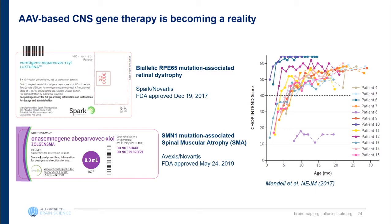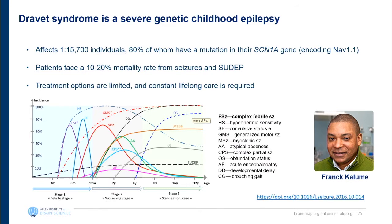We think there's a gigantic opportunity for AAV-based gene therapies to improve human health, and that our AAV-based enhancer vector system will provide the next generation of cell-type-specific and circuit-specific gene therapy efforts. We've been focusing on Dravet syndrome — a severe genetic childhood epilepsy. Most patients have one mutation in one allele of the large gene SCN1A, one of the main voltage-gated sodium channels in the brain. These patients face a high mortality rate — 10 to 20% die in the first few years of life from severe seizures, sudden death, and epilepsy — and the survivors have very limited treatment options with constant lifelong care required.